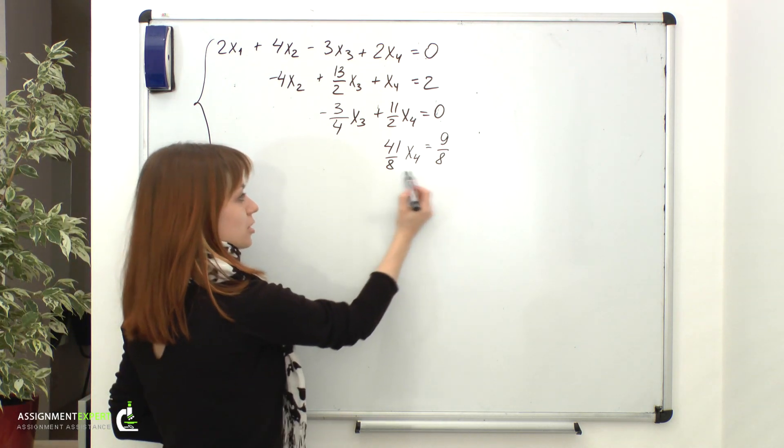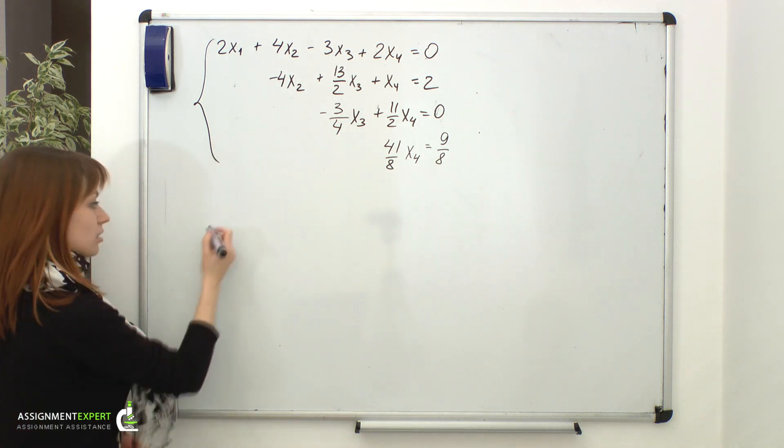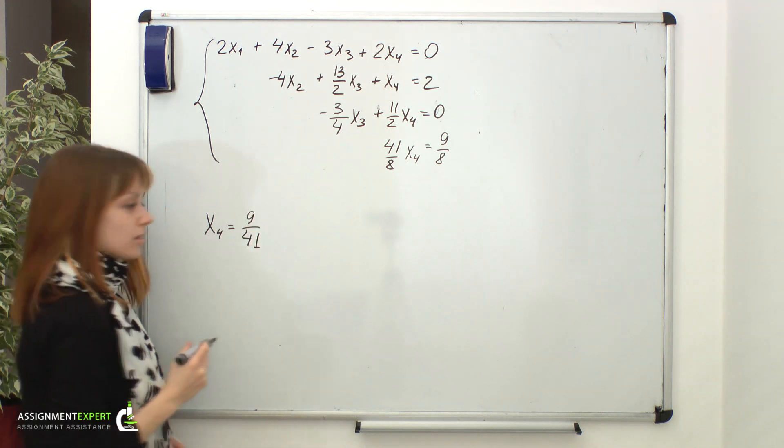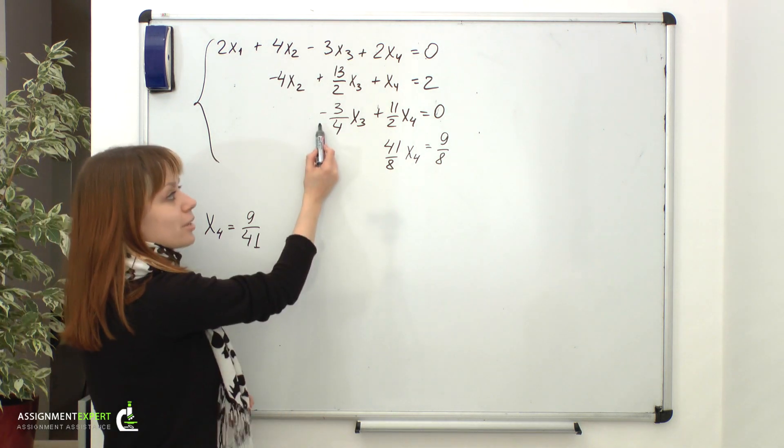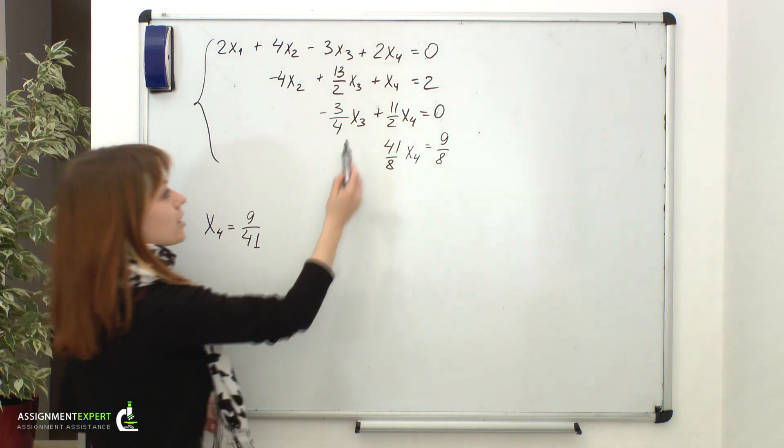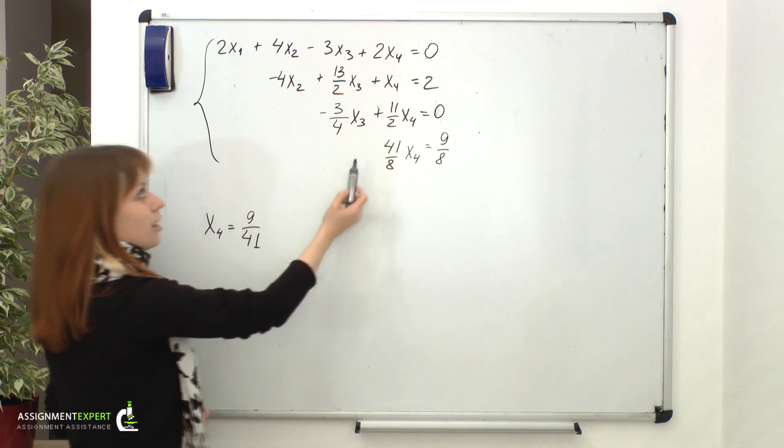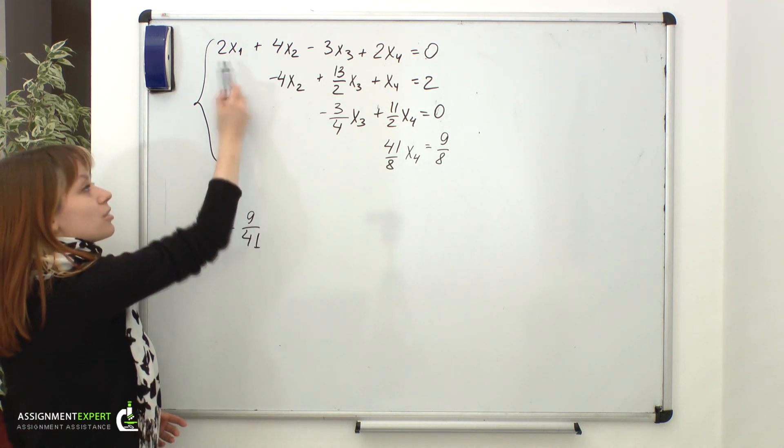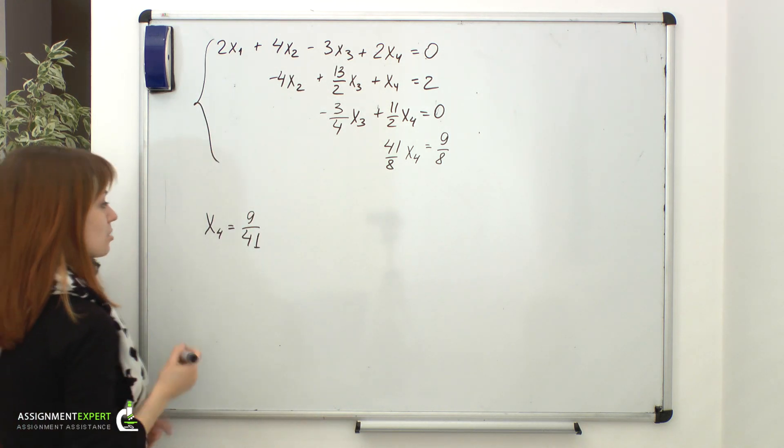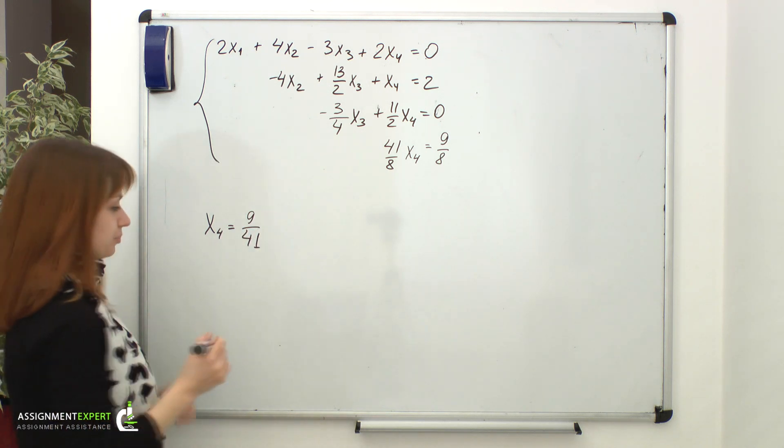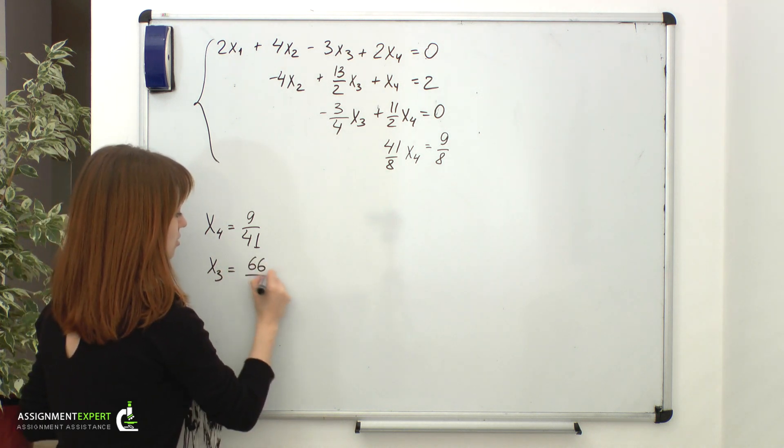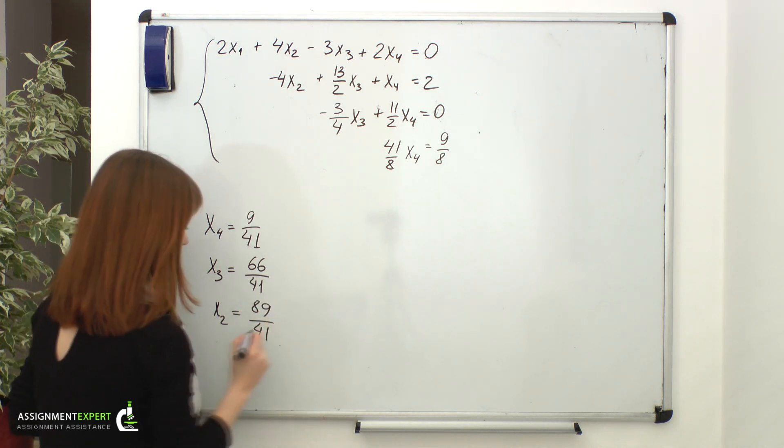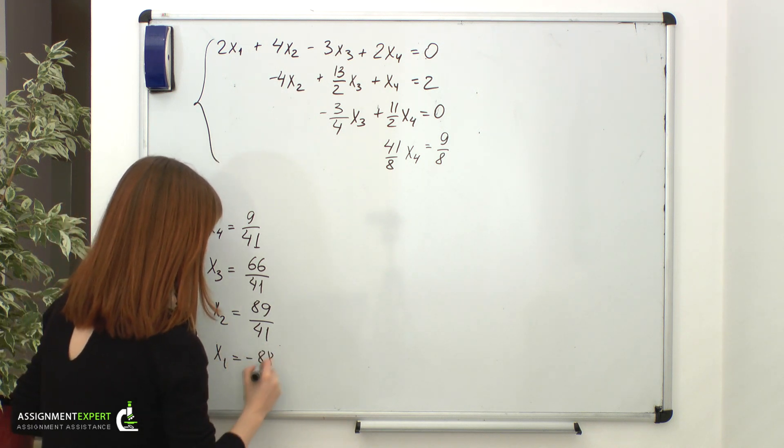Take a look. We have a fourth equation which only contains one variable, so we can easily find it. x4 equals 9 over 41. Then we'll just back substitute x4 into the third equation to obtain x3. After that, knowing x3 and x4, we can substitute them into the second equation and find x2. And then, having found x2, x3 and x4, we can easily find x1 from the first equation. So, the answer to our system is the following: x4 equals 9 over 41, x3 equals 66 over 41, x2 equals 89 over 41, x1 equals 98 over 41.